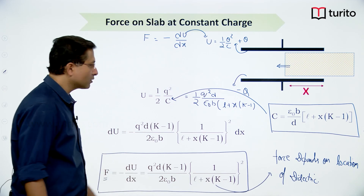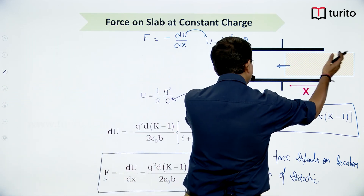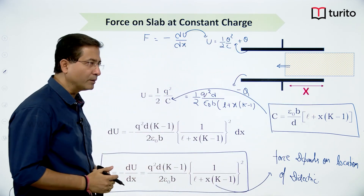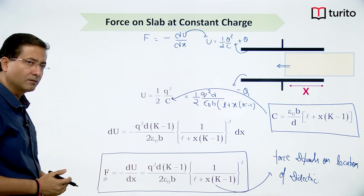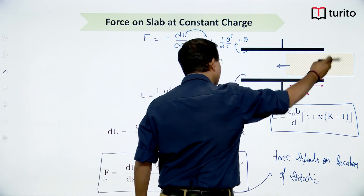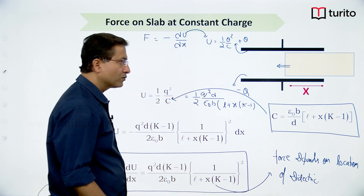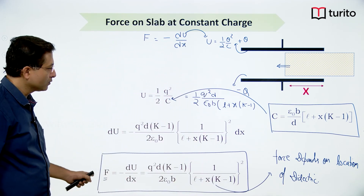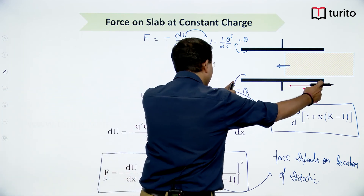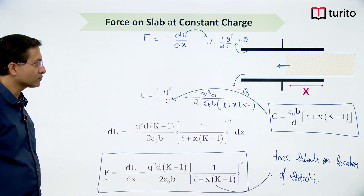Again, this formula should not be applied when the dielectric is completely occupying the space between the two plates, because the fringe effect from both sides will cancel and the net force will be zero. So this formula is valid when x is not equal to l. Both situations have been discussed — first when potential was constant, second when charge was constant.